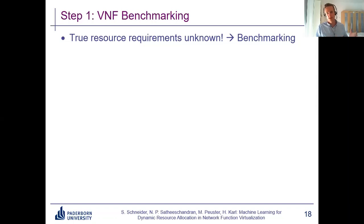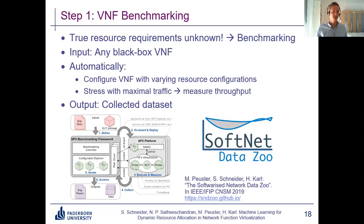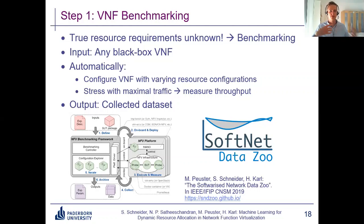In the previous slide I pretended we know the true resource requirements — that's not true in practice. Nobody tells us, so we have to find out first. That's why in step one we do VNF benchmarking. We take any black-box VNF, configure it with varying resource configurations, stress that VNF with maximal traffic to measure the throughput we can get, and repeat this multiple times with multiple different resource configurations. In the end, we have a large collected dataset of throughput measurements and the corresponding resource configurations. This benchmarking step is based on previous work we published last year.